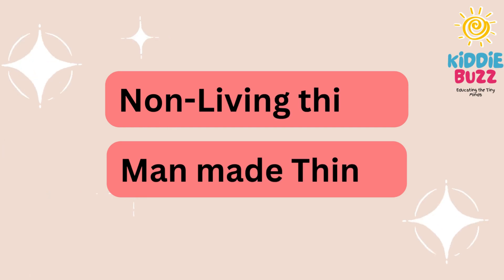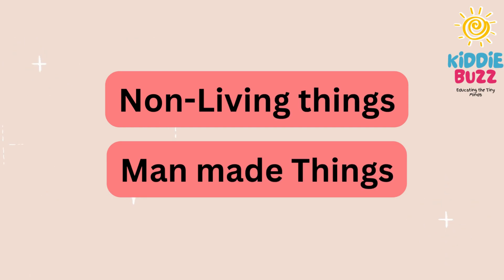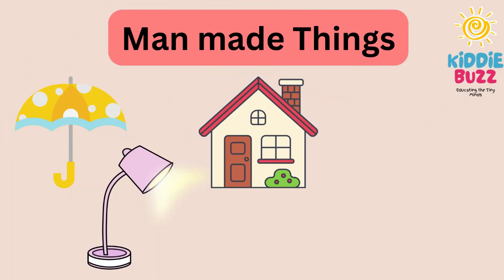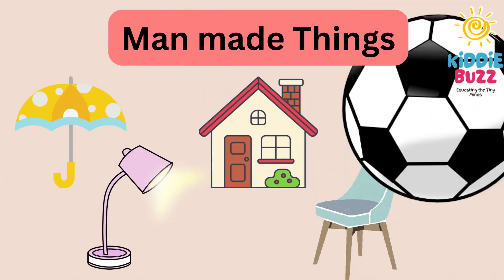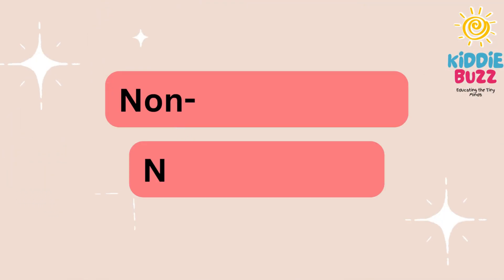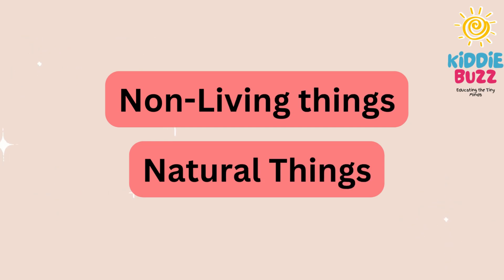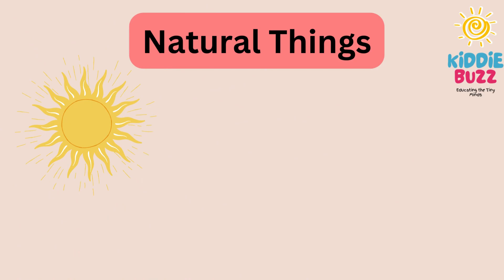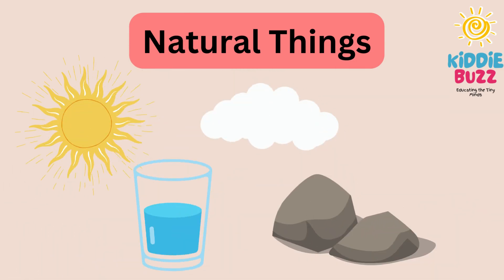Some non-living things are man-made things. For example, umbrella, lamp, house, chair, and football. But some natural things are also non-living things. For example, sun, water, clouds, stone, moon, and star.